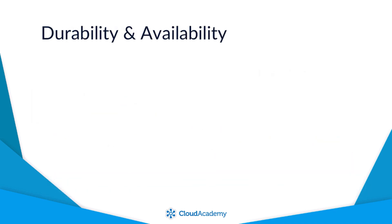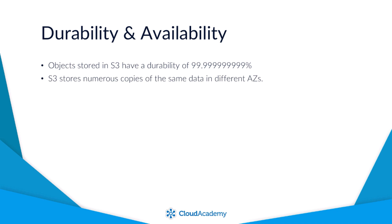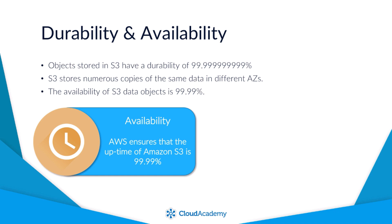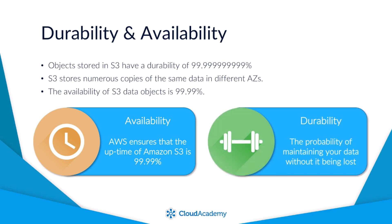Objects stored in S3 have a durability of 11 nines, so the likelihood of losing data is extremely rare — this is down to the fact that S3 stores numerous copies of the same data in different availability zones. The availability of S3 data objects is currently 4 nines. Availability refers to AWS ensuring S3 uptime is 99.99% to enable you to access your stored data, while durability refers to the probability of maintaining your data without it being lost through corruption, degradation, or other damaging effects.